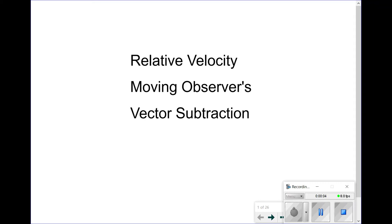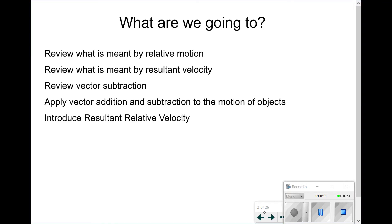In this video, we're going to be applying vector subtraction to motion to find an object's relative motion compared to a moving observer. We're going to review what is meant by relative motion and resultant velocity, review vector subtraction, and apply vector addition and subtraction to the motion of objects. We'll also introduce the complex concept of the resultant relative velocity.